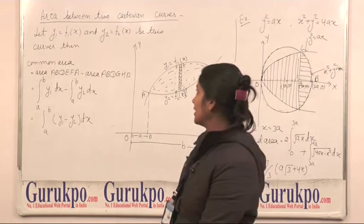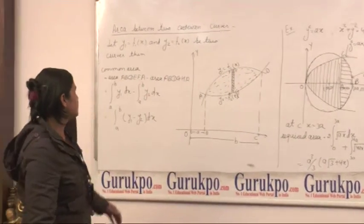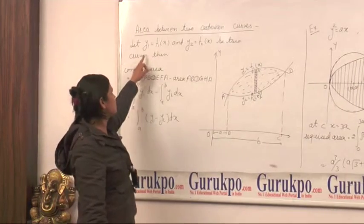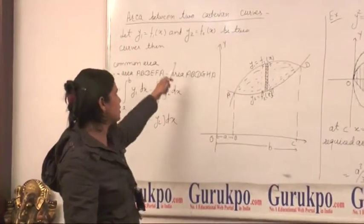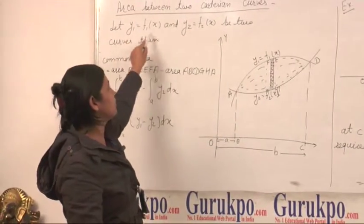Today's my topic is area between two Cartesian curves. How we can find out area between two Cartesian curves? Let us suppose there are two curves. First one is y1 equals f1(x) and second one is y2 equals f2(x). Then we want to find out the common area between those two curves.